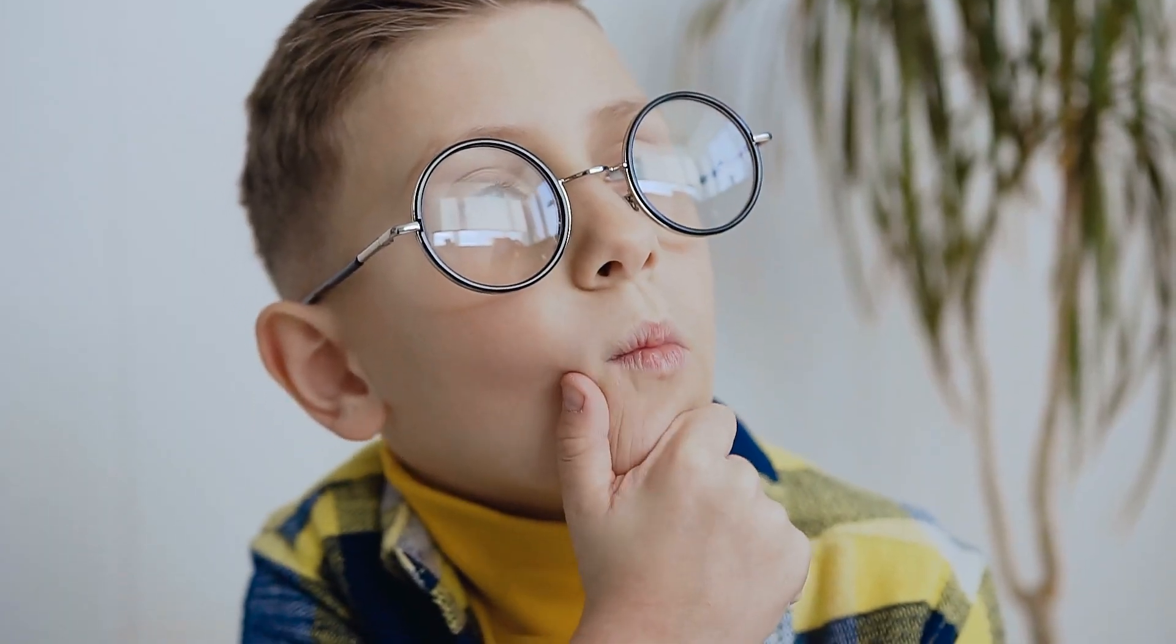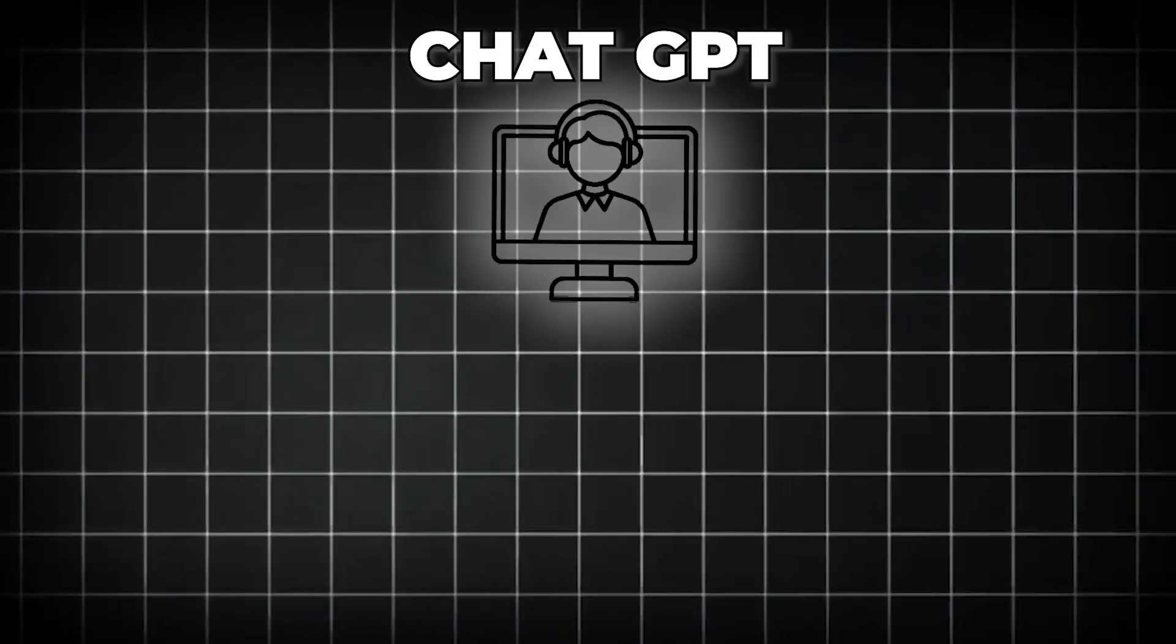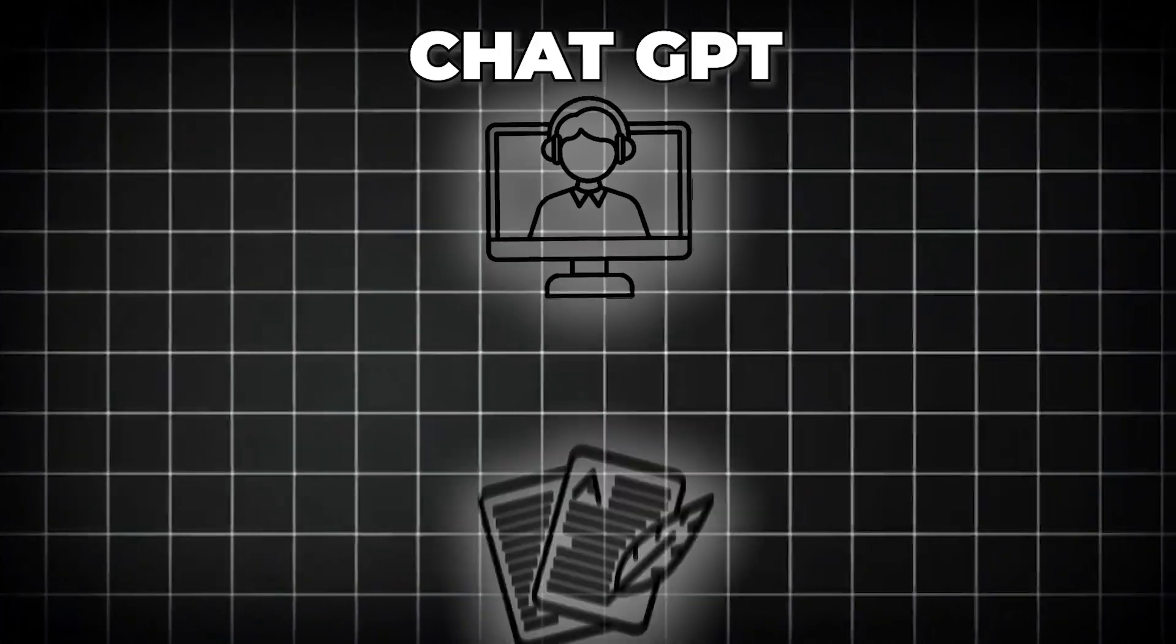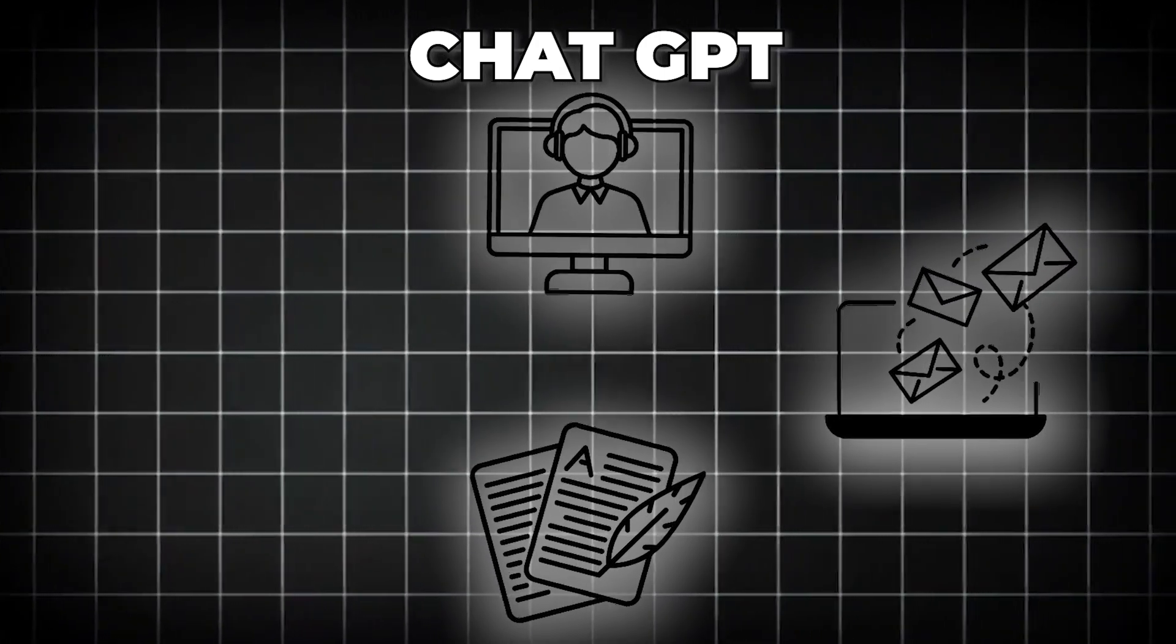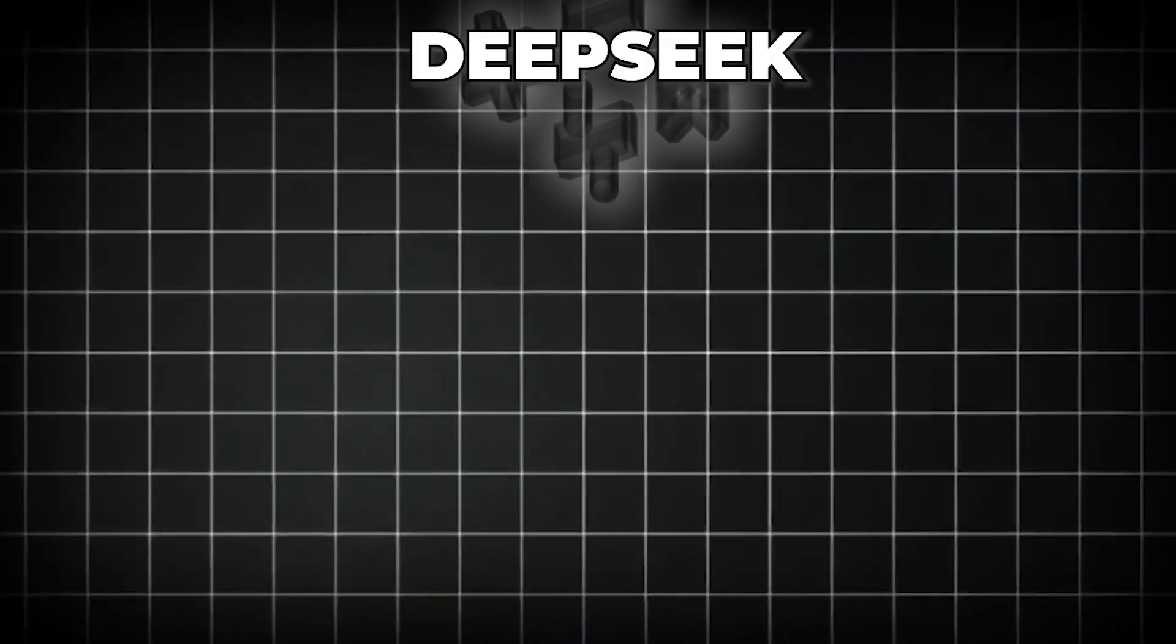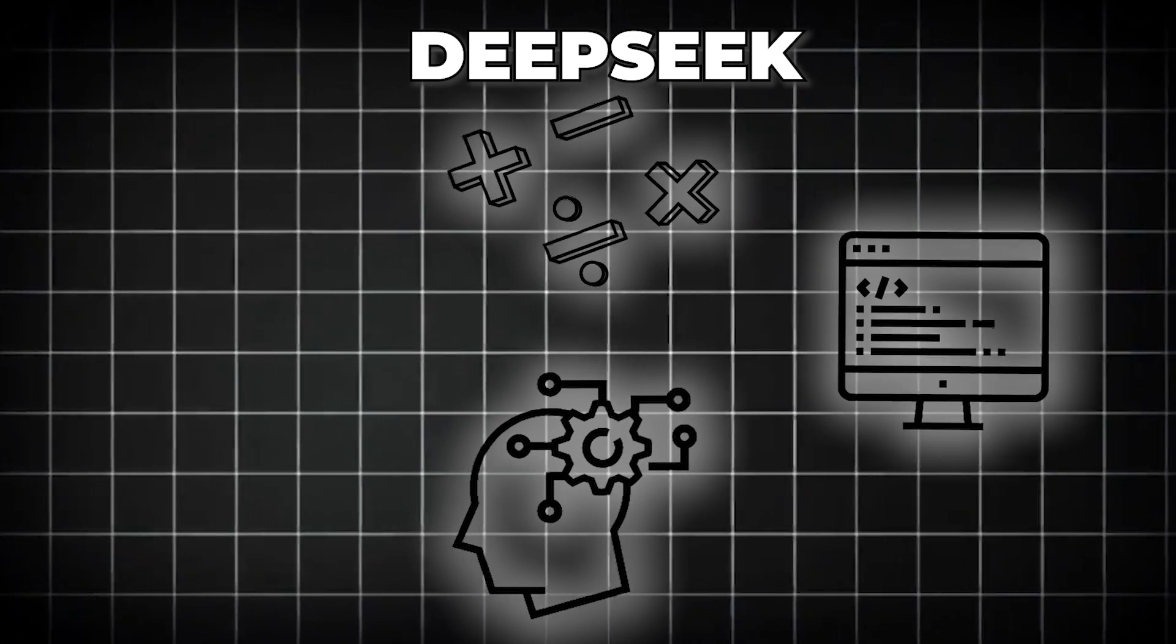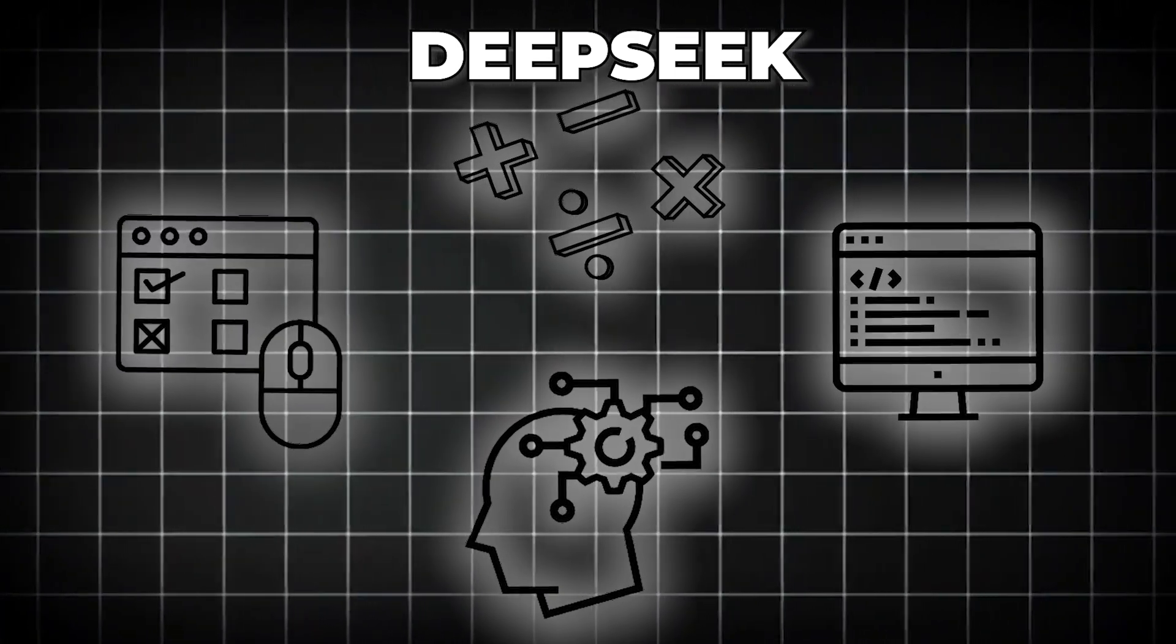This is where things get interesting. Talking about ChatGPT, think of it as the ultimate creative assistant. It crafts stories, writes engaging emails, and holds deep, meaningful conversations. On the other hand, DeepSeek is a structured thinker. If you throw math, logic, or coding problems at it, it will outperform ChatGPT in precision-based tasks.